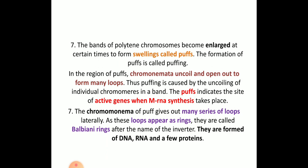In the puff regions, the chromonemata uncoil and open up into many loops. These puff regions indicate the sites of active genes where mRNA synthesis takes place. The chromonemata give rise to a series of loops that look like a ring, and hence they are called Balbiani rings. They are formed of DNA, RNA, and a few proteins.